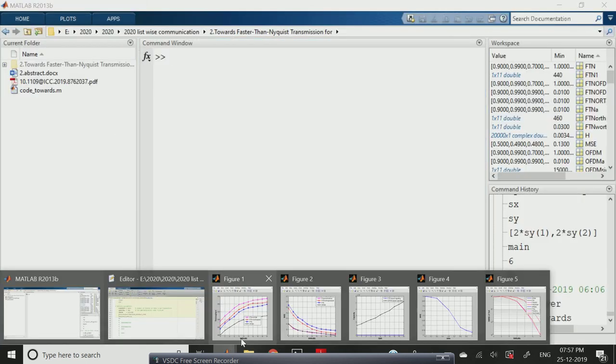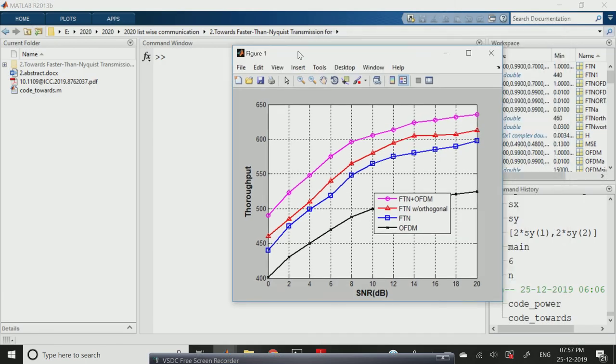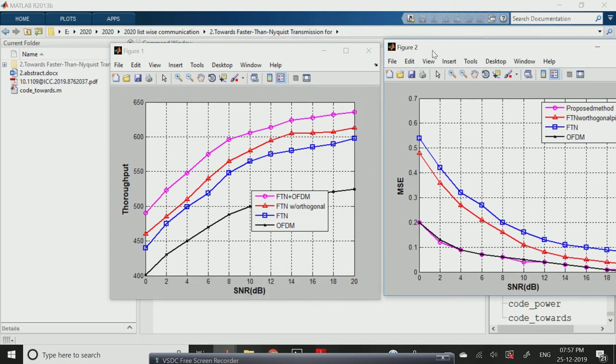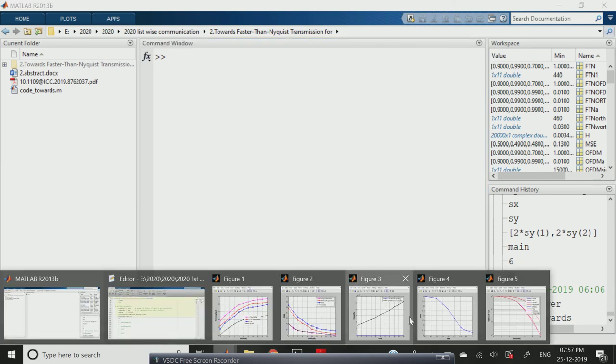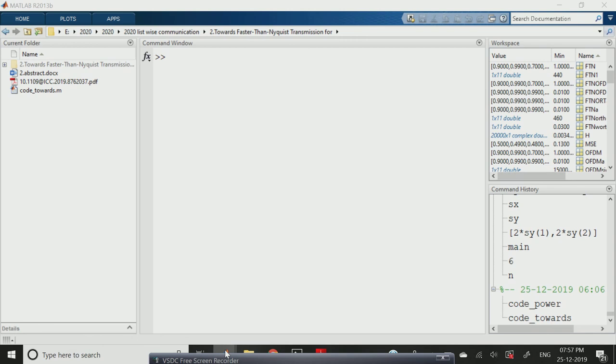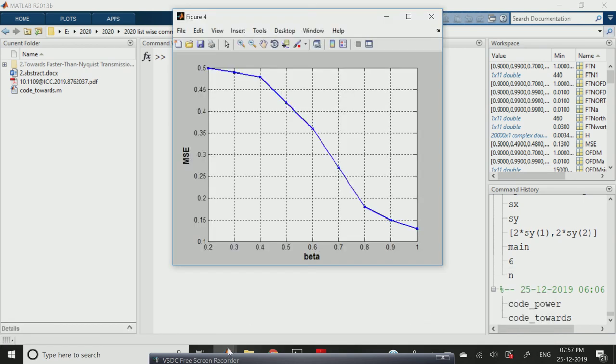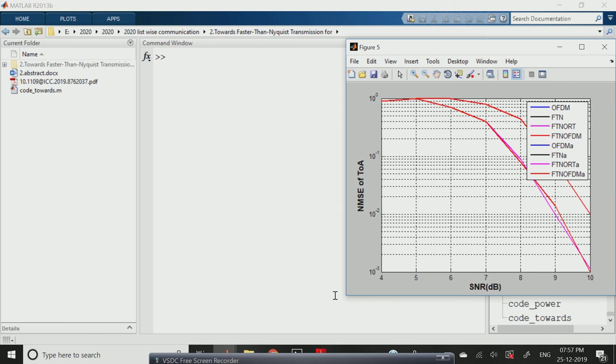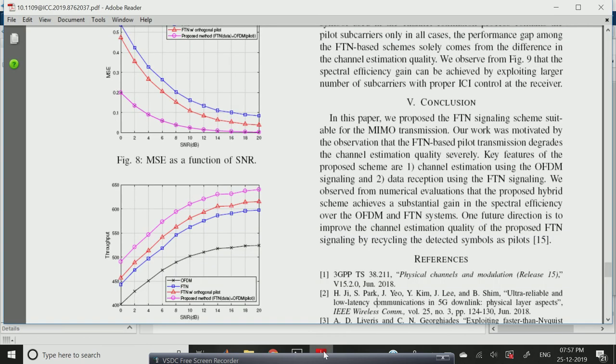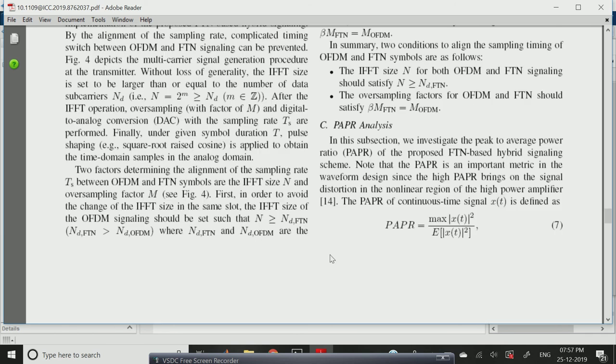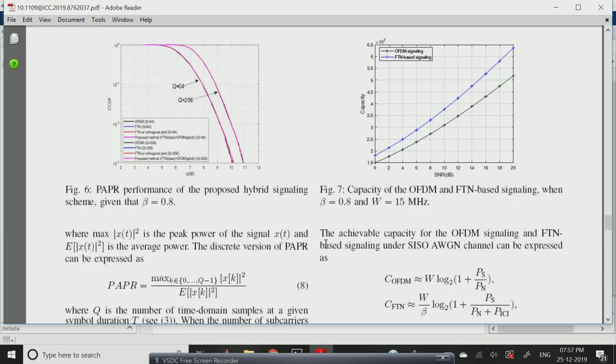This is our MATLAB software. These are the outputs. This is the first graph, and this is the second graph already we showed in the explanation section. This one is the third one, and this is the fourth graph, and this is the fifth graph. We got as per the base paper, we have implemented the total graphs without any errors, without any issues. Thank you.